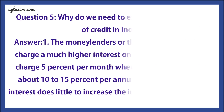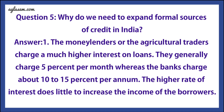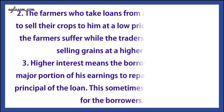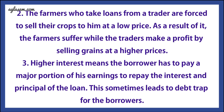Question 5: Why do we need to expand formal sources of credit in India? Answer: First, money lenders for agriculture and traders charge a much higher interest on loans — generally 5 percent per month — whereas banks charge about 10 to 15 percent per annum. The higher rate of interest does little to increase the income of a borrower. Second, farmers who take loans from a trader are forced to sell their crops to him at a low price, causing farmers to suffer while traders make a profit by selling grains at high prices.